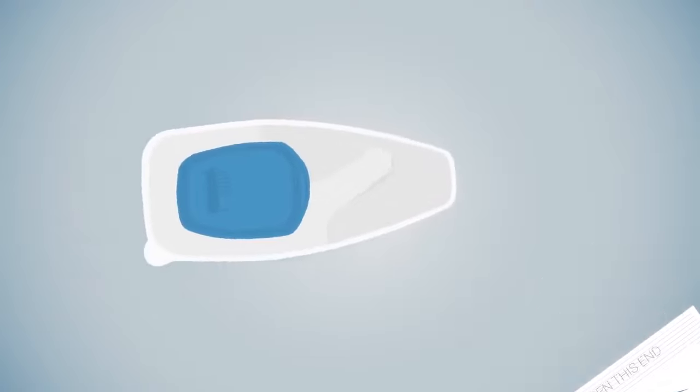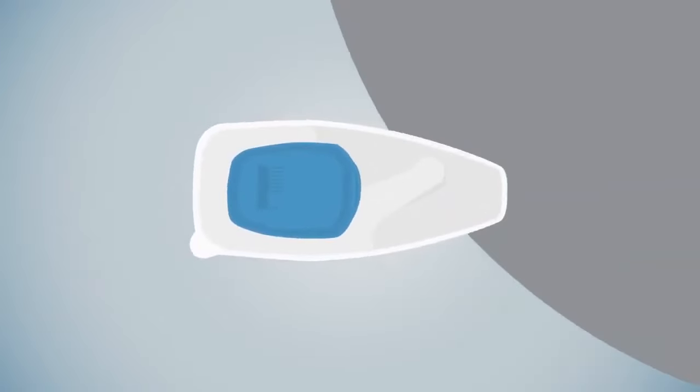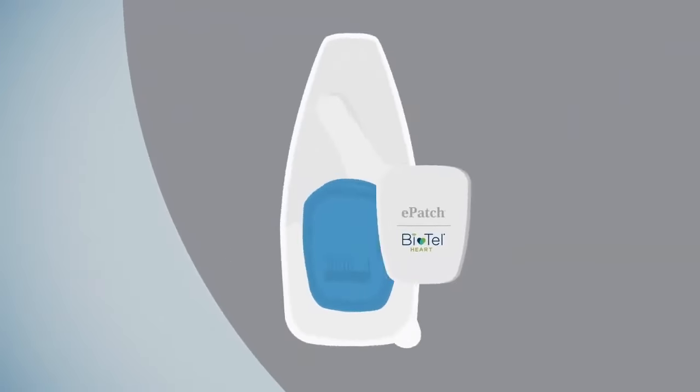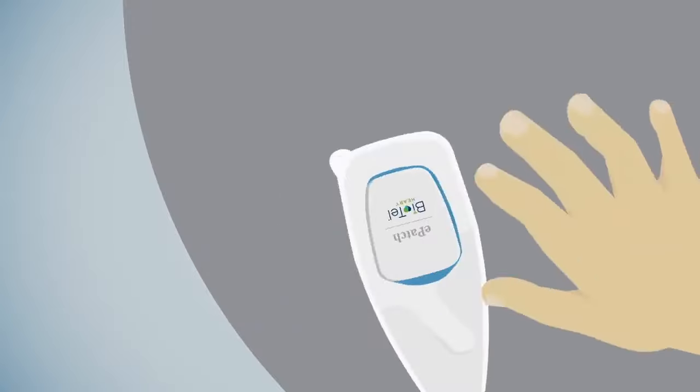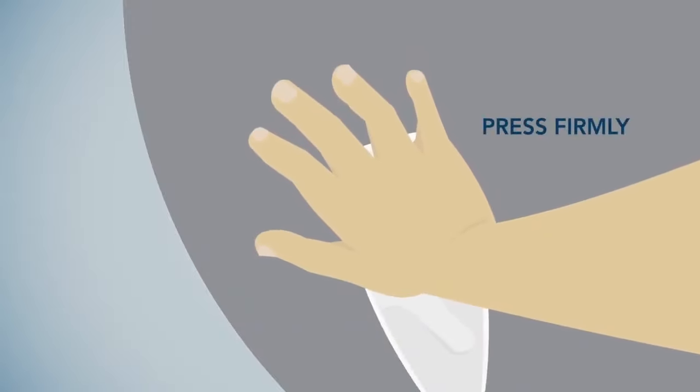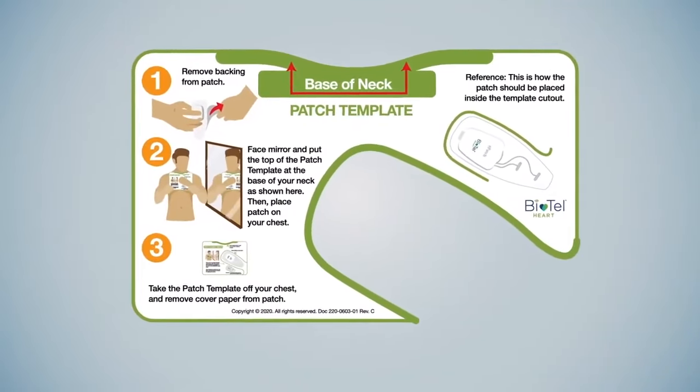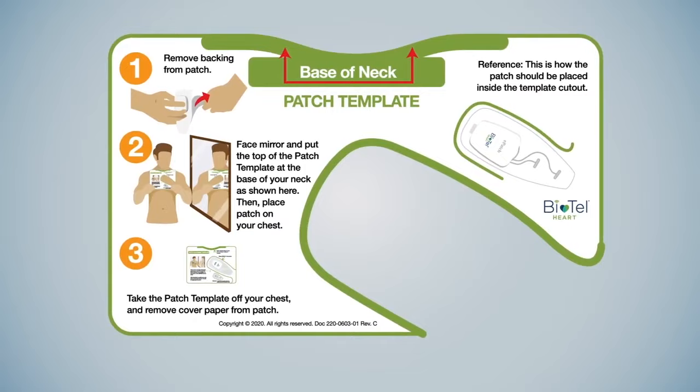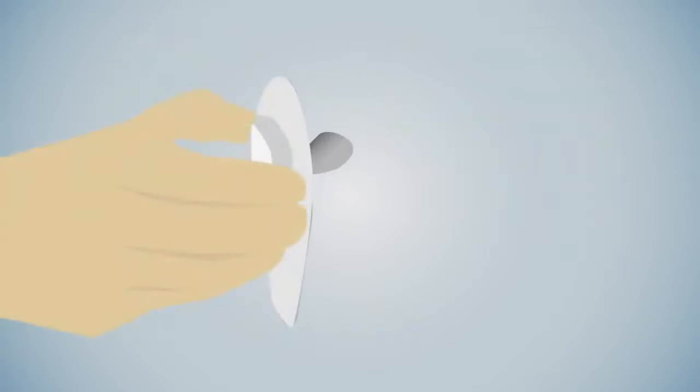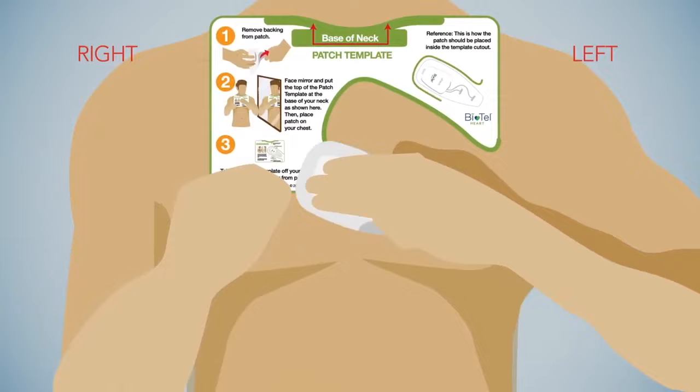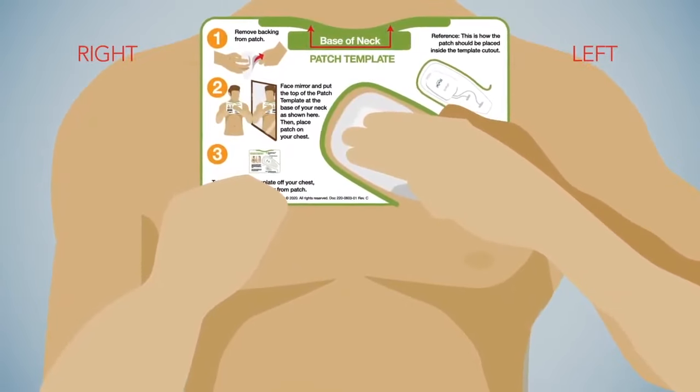Remove a patch from the patch pouch in your kit. Place sensor into the patch and press down firmly to snap it in place. Now, locate the patch placement template in your kit and follow its instructions for use. Remove clear backing and apply to your chest using the patch placement template as shown.